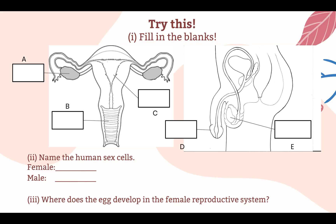You are ready for a short quiz. Pause the video to attempt the following question on your own. When you are done, continue with the video. A is the ovary, the female reproductive organ. B is the vagina. And C is the womb. Take note that only a singular ovary is labelled in this diagram, so remember to spell it O-V-A-R-Y. D is the penis, the male reproductive organ, and E is the testis, spelled T-E-S-T-I-S, as one testis is labelled in this diagram. The female sex cell is the egg, and the male sex cell is the sperm. Lastly, the fertilized egg develops in the womb in the female reproductive system.